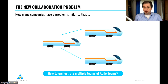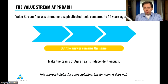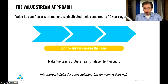This worked, and companies created teams of agile teams. Now they have a lot of teams of agile teams — but how to orchestrate these? The answer is pretty much the same as 15 years ago: make these teams of agile teams independent enough so that they can decide, work, and deliver each on their own. Even though we now have much better tools like value stream analysis to help us make these teams of agile teams more independent, the core answer remains the same.